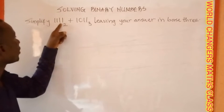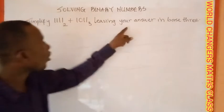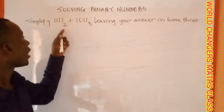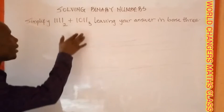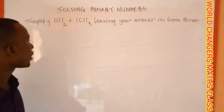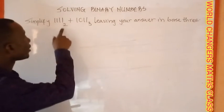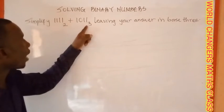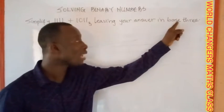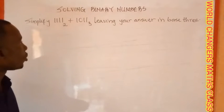Simplify 1111 base two plus 1011 base three, leaving your answer in base three. Some students are confused by this type of problem because the numbers are in different bases. This one is in base two and this one is in base three, and we are instructed to leave our answer in base three. Now how do we go about that? Very simple.